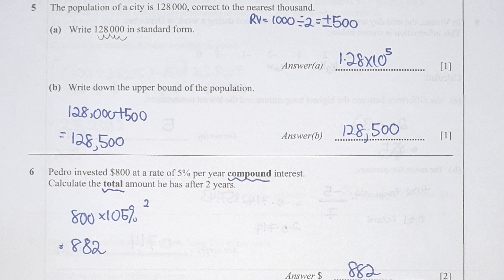Question 5: write in standard form. For 128,000, I shift the decimal 5 places to the left, hence the result is 1.28 times 10 to the power of 5.